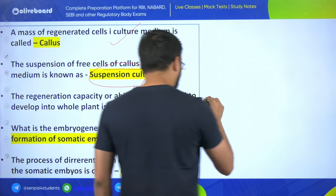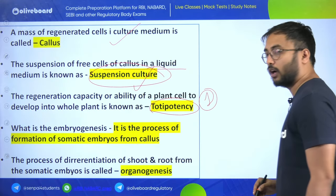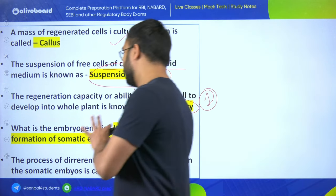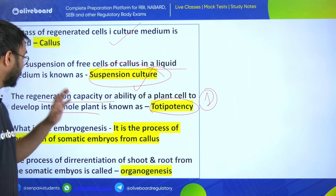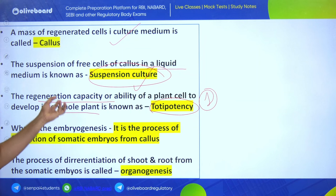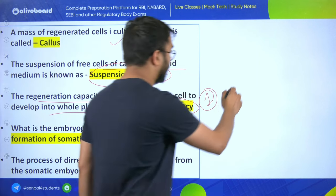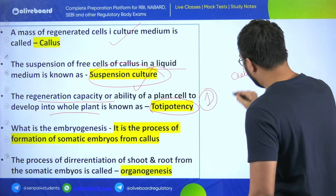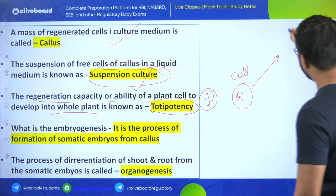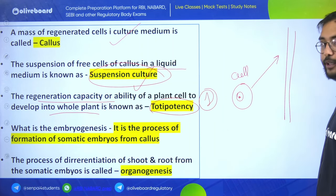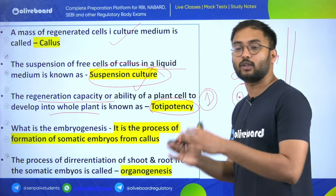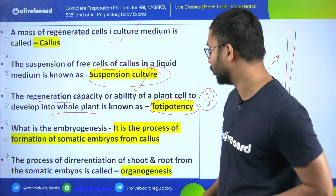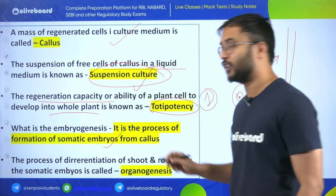You should know about suspension culture as many questions are asked on it. Also know about totipotency and pluripotency - a question on pluripotency was asked in NABARD. Totipotency is the ability of a plant cell to develop into a whole plant from one single nucleated cell. Please mention in the comment section if you know about pluripotency.